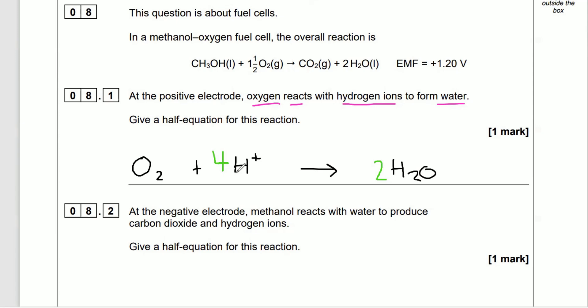The atoms are balanced, but it's not electrically balanced — there's a 4+ charge on one side and neutral on the other. To fix that, add 4 electrons (4e⁻) to the left. Now it's electrically balanced — that scores a mark. Also note: those four electrons are being gained, and from OIL RIG — oxidation is loss, reduction is gain — this is reduction. Oxygen going to H₂O is reduction.